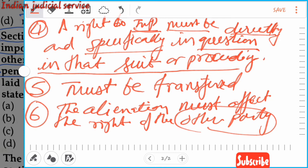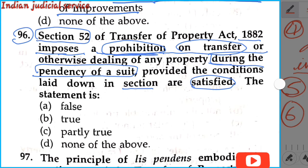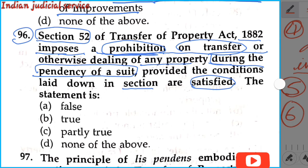Now coming to our question: section 52 deals with the Doctrine of Lis Pendens, meaning that property which is disputed under a proceeding in court cannot be transferred. Section 52 of the Transfer of Property Act 1882 imposes the provision — no one can transfer the property which has arisen as a dispute before the court. The statement is true, so our answer is option B.